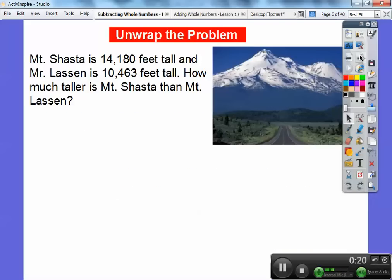Here's an example. Mount Shasta is a beautiful mountain when you're driving up in Northern California, way up above Redding. Mount Shasta is 14,180 feet tall and Mount Lassen is another big mountain in California, 10,463 feet tall. How much taller is Mount Shasta than Mount Lassen?